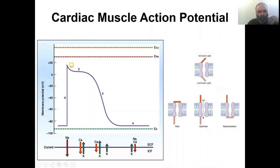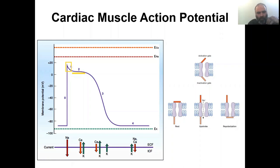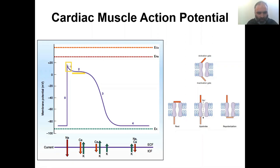Phase one is the early repolarization — this small portion after the peak. After depolarization ceases, the voltage comes back a bit and then flattens out. This phase is often asked in viva exams. An examiner might ask you to draw the ventricular muscle action potential and then question why you drew this small early dip — it represents early repolarization.